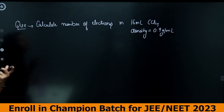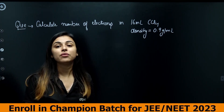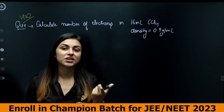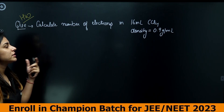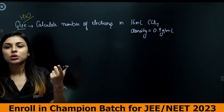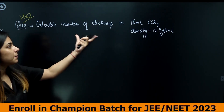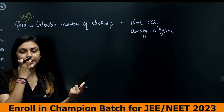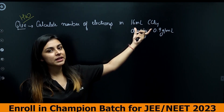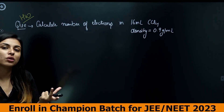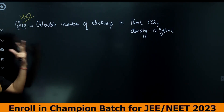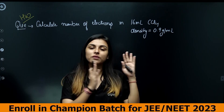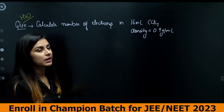Homework question: Calculate the number of electrons in 16 ml of CCl4. The steps are: first find mass (using density), then find molar mass of CCl4, then find number of moles, then find electrons per molecule of CCl4, then multiply by number of moles. Post your answer in the comments section.